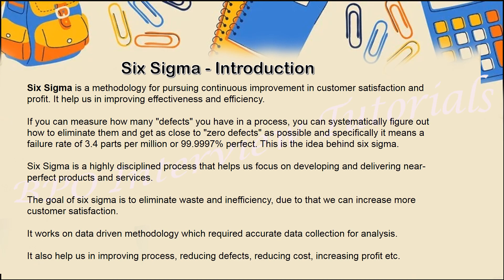Six Sigma is basically used to reduce or remove waste and improve efficacy in the process. It also helps with customer satisfaction, also known as C-SAT. The core idea is: if you can measure how many defects are in your process and systematically figure out how to eliminate them, and your defects are almost near zero, then you have achieved Six Sigma.